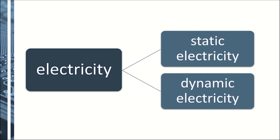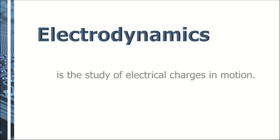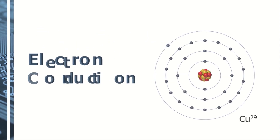The other type of electricity is dynamic electricity. Dynamic electricity is the steady flow of electrons, or the continuous flow of electrons from atom to atom. It is otherwise known to us as the electric current, or simply electricity. If the study of static electricity is electrostatics, the study of dynamic electricity is called electrodynamics. For us to understand dynamic electricity, we have to understand how electrons can travel from atom to atom, or how electrons are conducted.